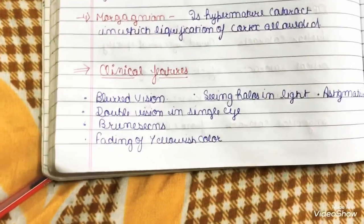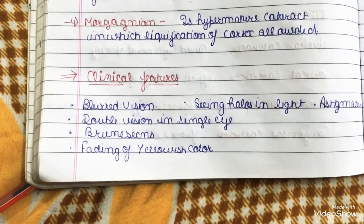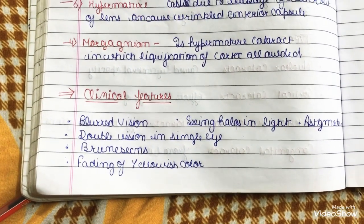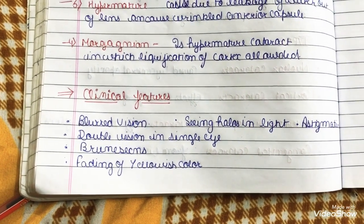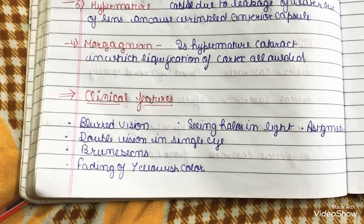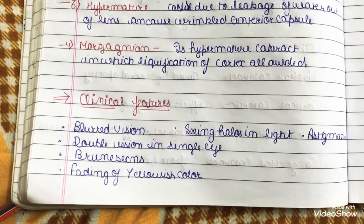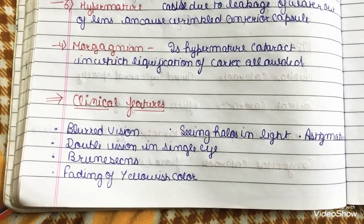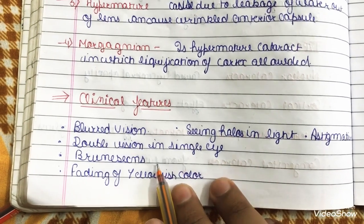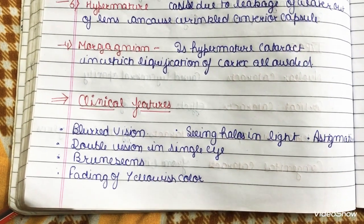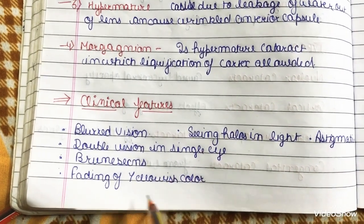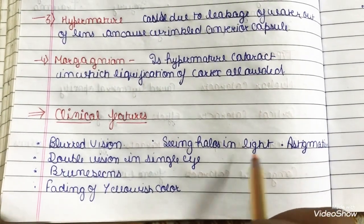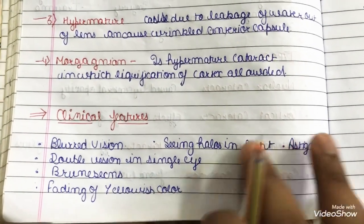Clinical features — the signs and symptoms through which we can detect cataract — include blurred vision, double vision in a single eye, bruiseness (the change of lens color from yellow to brown), fading of yellowish color, seeing halos around lights, and astigmatism.